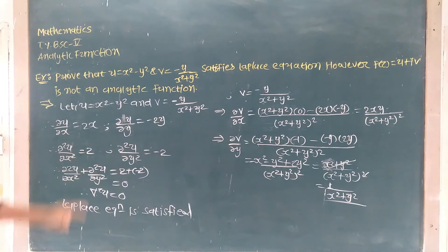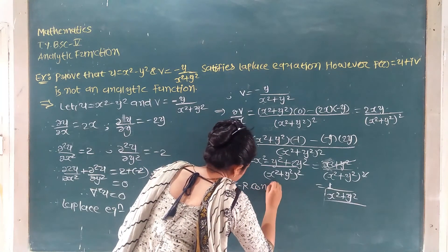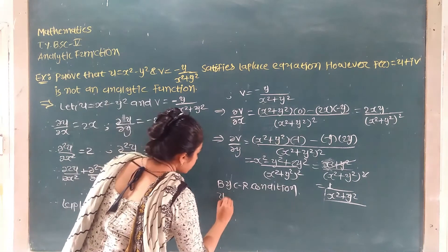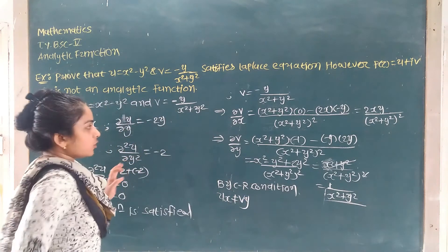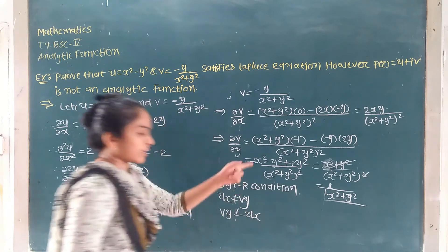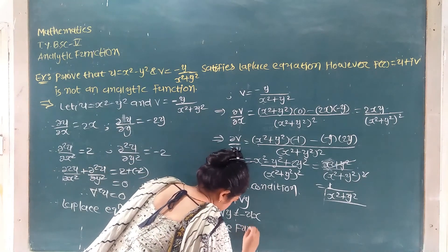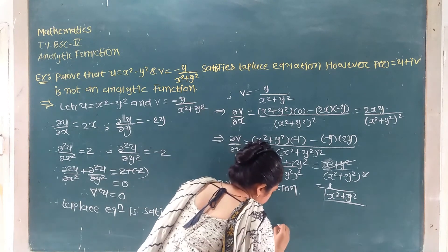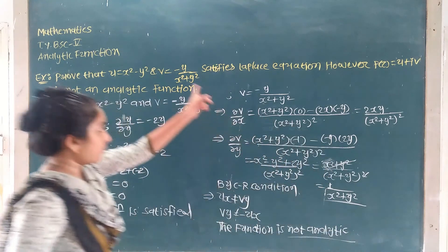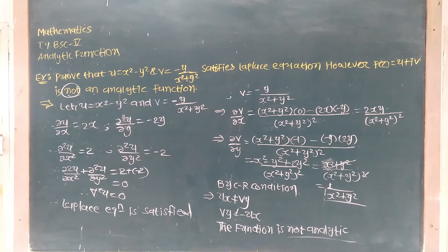Then u_x is supposed to equal v_y by the Cauchy-Riemann condition. So this is a function. The analytic matrix C-R conditions: from the C-R condition, the function is not analytic. The C-R condition fails: u_x is not equal to v_y. u_x squared and v_y squared: u_x squared minus u_x squared is not equal — so f of z is not analytic.